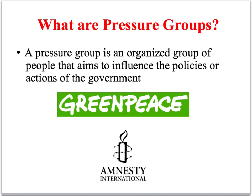So let's begin with a simple definition. We can define a pressure group as an organised group that aims to influence the policies or actions of the government. Two examples are Greenpeace, which tries to influence government policy on the environment, and Amnesty International, which tries to influence government policy on human rights.